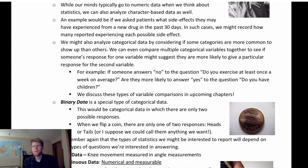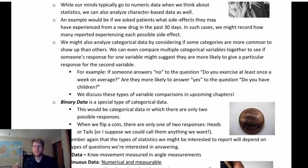One special type of categorical data is binary data — data that falls into exactly two categories. Yes/no questions are a classic example of binary data. Binary data has some unique properties we'll discuss later in the course, and it's worth recognizing when we have binary data versus categorical data with three or more categories.